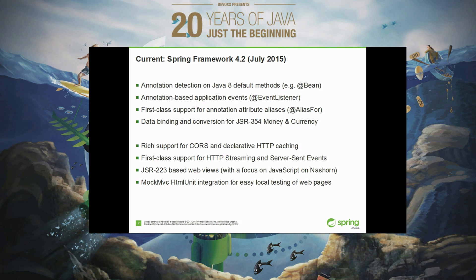In Spring Framework, we tend to have feature releases of a very rich kind. A 4.1, a 4.2, a 4.3 release actually brings a lot of features onto the table — more than you would get out of major releases in some other projects. It's just the version terminology that we are using.